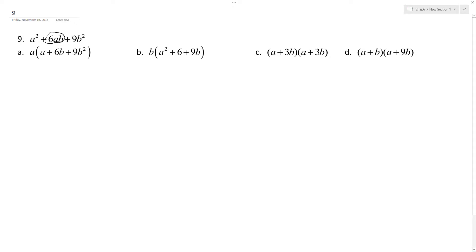...what multiplied and added together equals 9 and then 6, it would be 2, 3. So if you look here, a plus 3b and then a plus 3b.